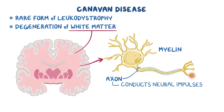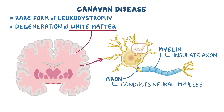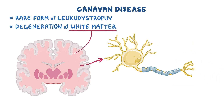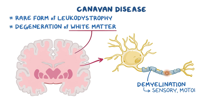Myelin refers to the fatty coating around axons, which helps insulate the axon to make neural impulses travel quickly and efficiently. Loss of myelin, or demyelination, makes travel for neural impulses difficult, ultimately leading to a variety of sensory, motor, and cognitive problems.